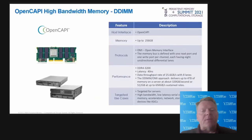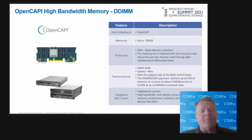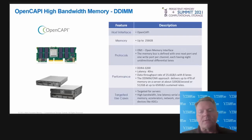Next we have the DDIMM — the Differential DIMM. The DDR4 Differential DIMM follows the Open Memory Interface Standard, OMI, which is part of OpenCAPI. The DDIMM is a transformative memory module that enables a data throughput rate of 25.6 gigabytes per second per lane and a latency of approximately 40 nanoseconds, with densities up to 256 gigabytes. The memory bus is defined with one read port and one write port per channel, each having eight unidirectional differential lanes. The 84-pin DDIMM is intended for use in standard server environments, utilizing a serial interface and a differential data buffer to significantly expand memory bandwidth.